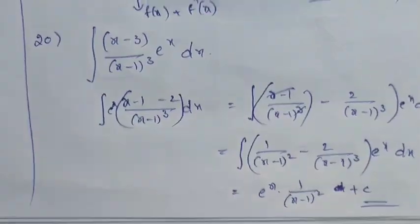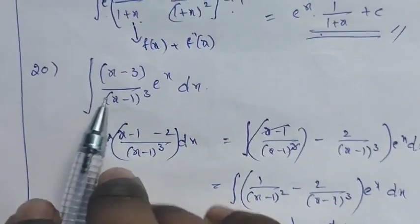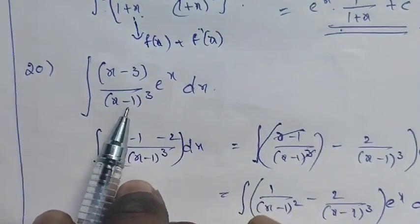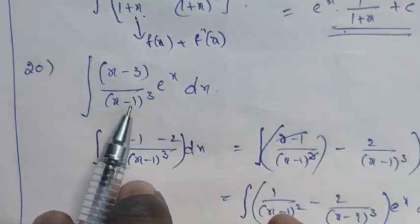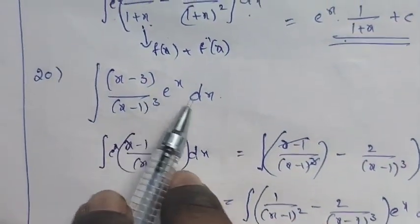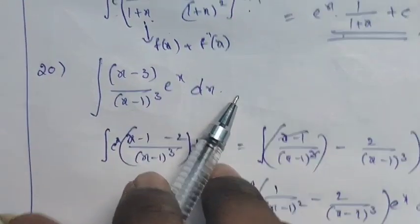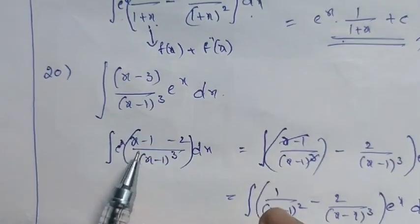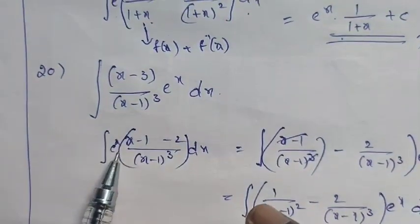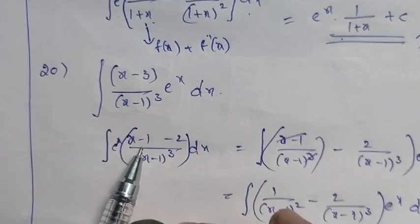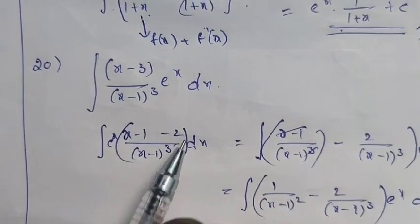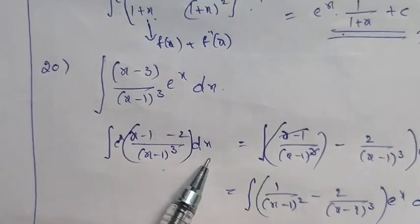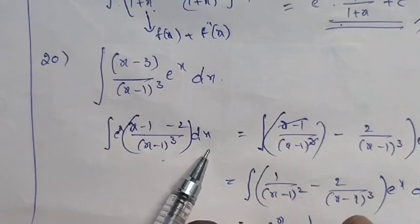This completes the solution. One more problem: Integration of [(x − 3)/(x − 1)³] · e^x dx. We can write x − 3 as (x − 1) − 2, so it becomes e^x · [(x − 1 − 2)/(x − 1)³] dx.